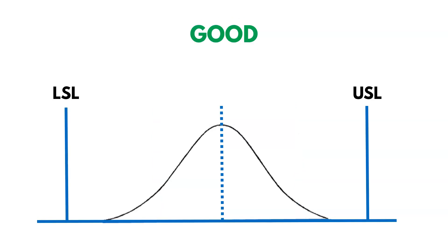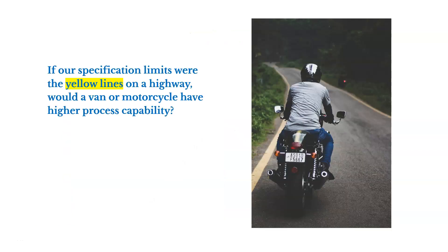If we're seeing excessive variation, it's much more difficult to address. Ideally, we want minimal variation and our process to be centered. If our specification limits were the yellow lines on a highway, would a van or a motorcycle have higher process capability? It's going to be the motorcycle — they've got more room to deviate left or right and still be within customer specification limits, with some safety room to spare.